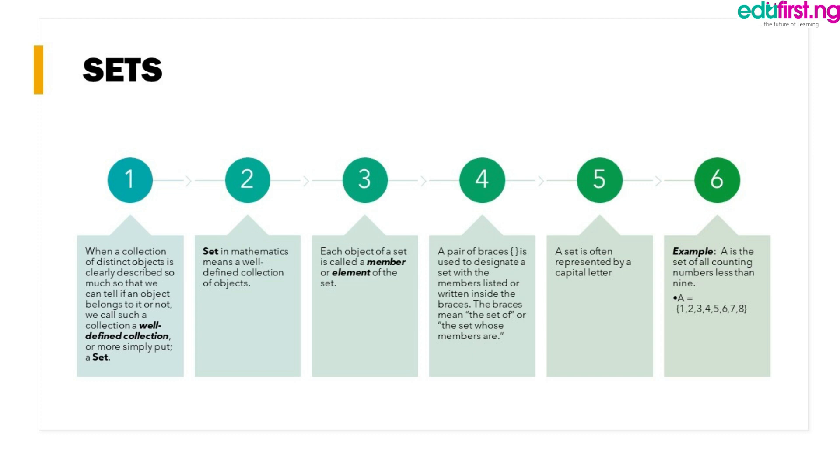When a collection of distinct objects is clearly described so much so that we are able to tell if an object belongs to it or not, we call such a collection a well-defined collection or more simply put, a set. Set in mathematics means a well-defined collection of objects. Each object of a set is called a member or element of the set.